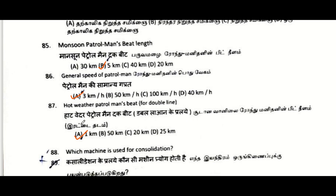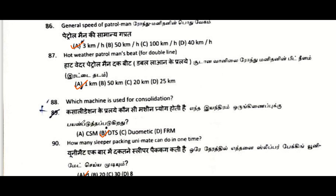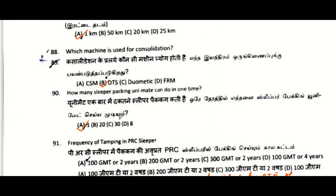Monsoon patrol beat length: maximum 5 km. General speed of the patrolman: 3 kmph. Hot weather patrol beat for double line: 1 km. Which machine is used for consolidation: DTS — Dynamic Track Stabilizer.